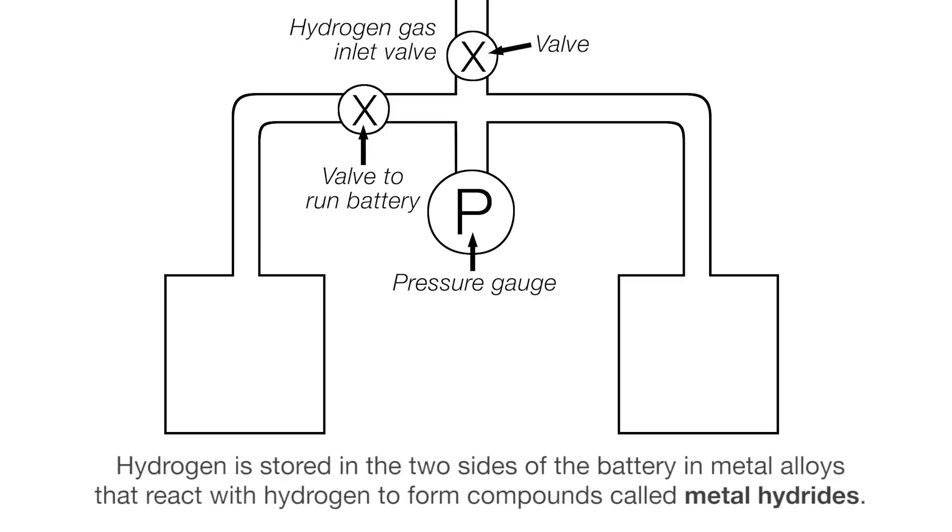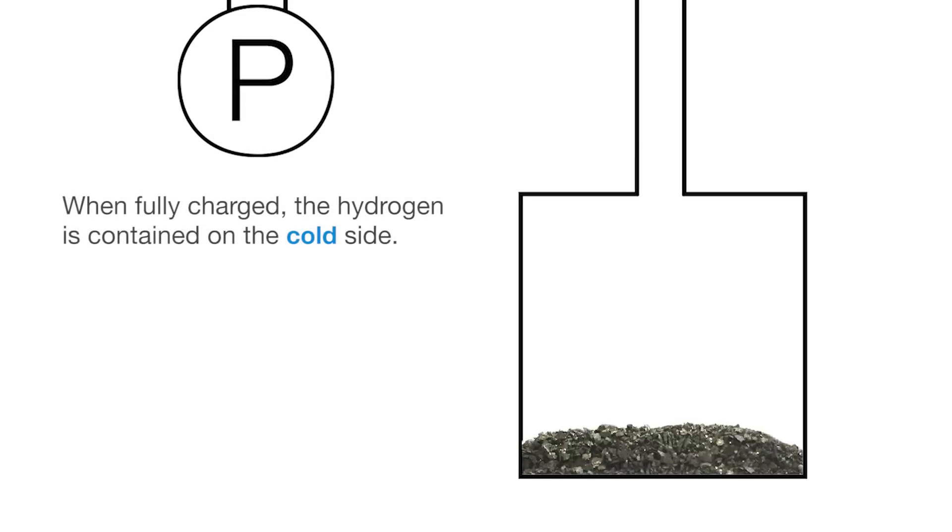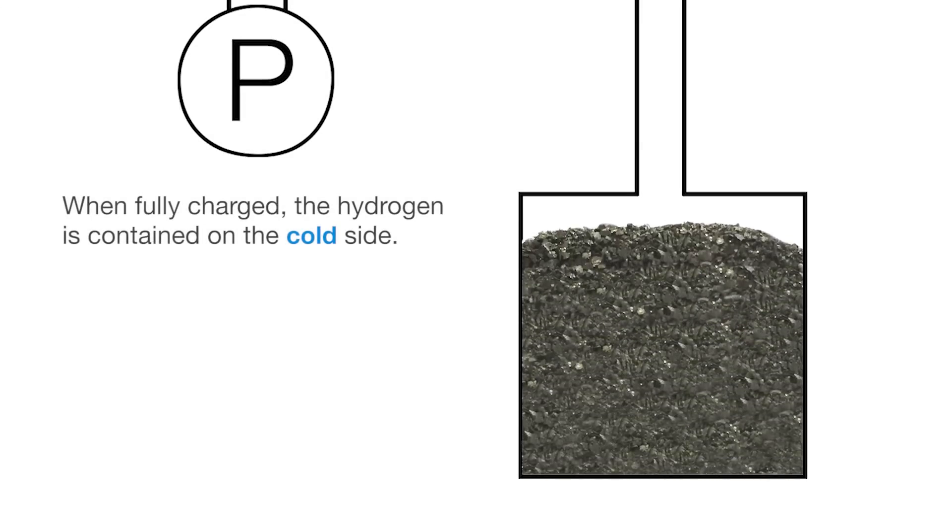Hydrogen is stored in the two sides of the battery in metal alloys that react with hydrogen to form compounds called metal hydrides. When fully charged, the hydrogen is contained on the cold side.